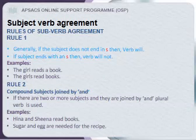Rule one: generally, if the subject does not end in -s, then the verb will. If the subject ends with -s, then the verb will not. Examples: the girl reads a book; the girls read books.